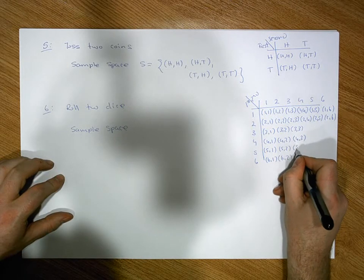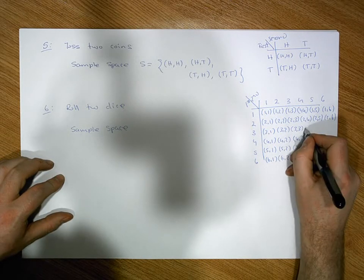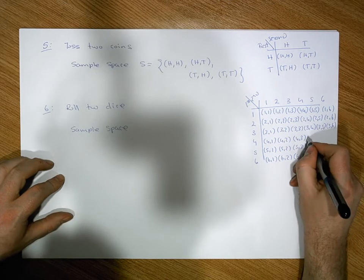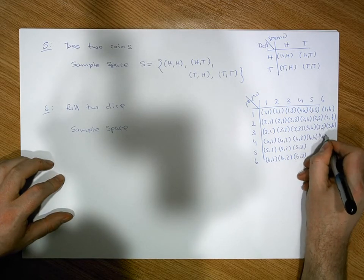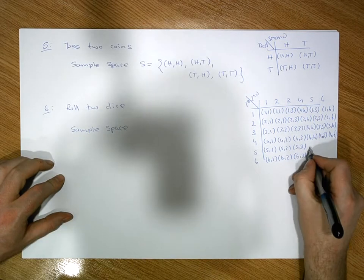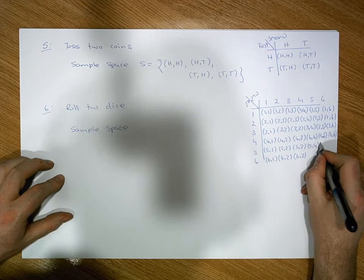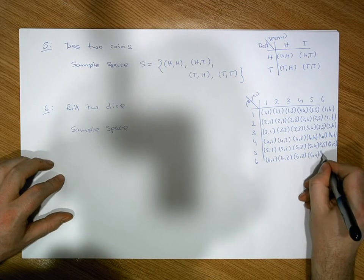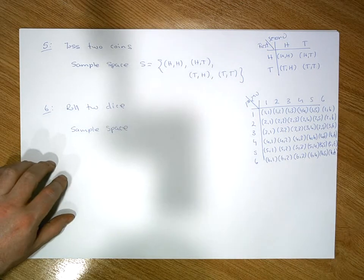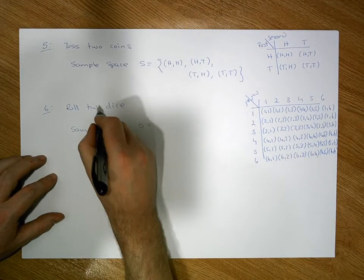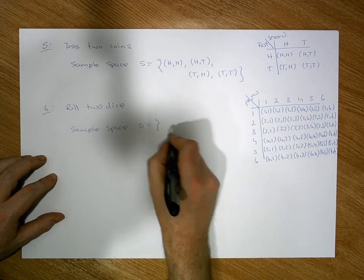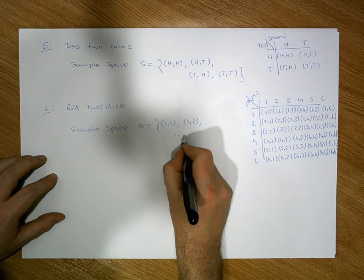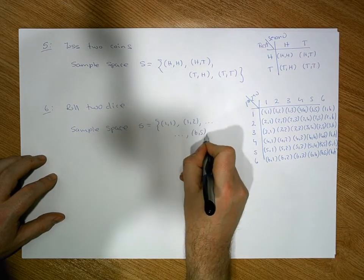Here we have 4-3, 5-3, 6-3, 3-4, 3-5, 3-6, 4-4, 4-5, 4-6, 5-4, 5-5, 5-6, 6-4, 6-5, and 6-6. These are all the possible ordered pairs. So the sample space in relation to rolling 2 dice would be the set of all these ordered pairs: 1-1, 1-2, and so on all the way through to 6-5 and 6-6.